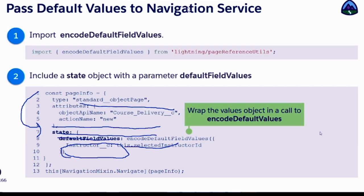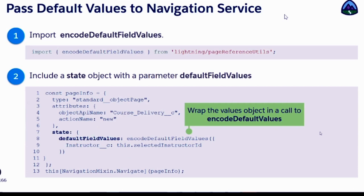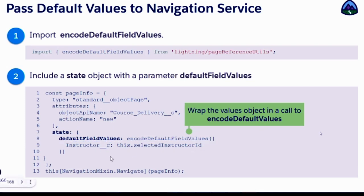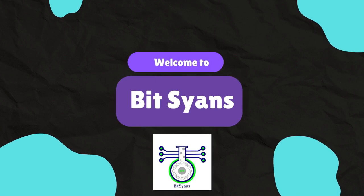Sometimes when you open a page in navigation mode — say for edit, or creating a new contact from an account — you want to automatically assign the account name to the contact without the user having to choose it, since you are creating the contact from the account itself. For that purpose, you can define default field values using the state and default field values property. For example, setting the instructor value as a default field value — this encodes the default field value, wrapping it in the right object format.